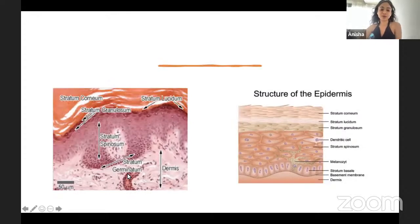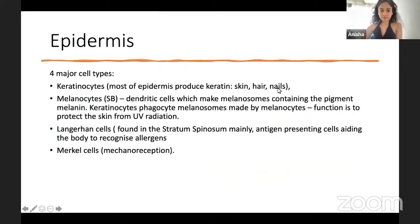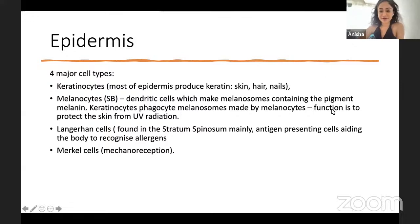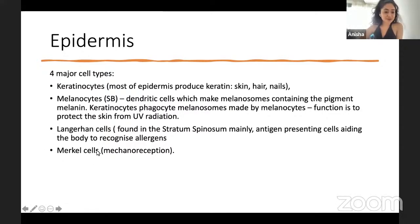To recap the histology: stratum germinativum is another name for stratum basale, followed by spinosum, granulosum, the thin lucidum, and then the corneum. There are four major cell types in the epidermis: keratinocytes (found in skin, hair, nails), melanocytes (dendritic cells producing melanosomes containing melanin — keratinocytes actually phagocytose these to protect against UV), Langerhans cells (antigen-presenting cells in the stratum spinosum), and Merkel cells (for mechanoreception).